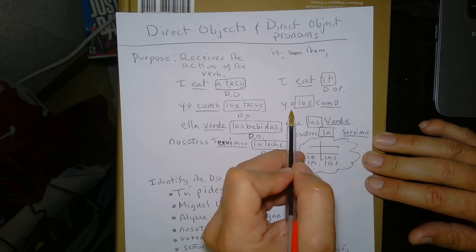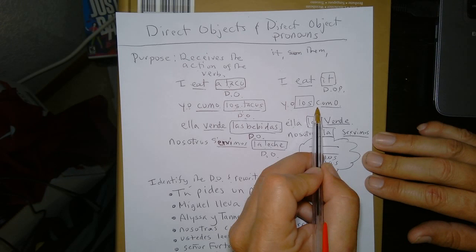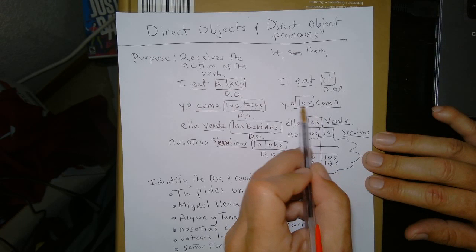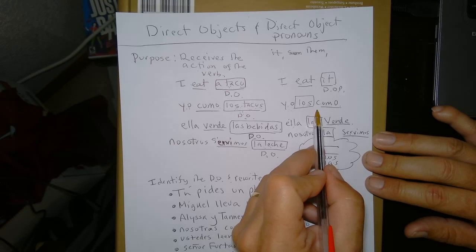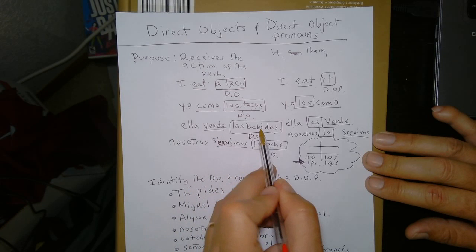So, I'd say yo los como. So, don't fall in the trap of thinking it says, I, them, eat. That sounds dumb, Mr. Snorow. Well, yeah. It would sound dumb in English if that's the way you said it. Well, this is Spanish. And this is where it goes. So, you can't think about it the other way. You have to think about it. This is the way it is. And that's it. Right. So, yo los como.